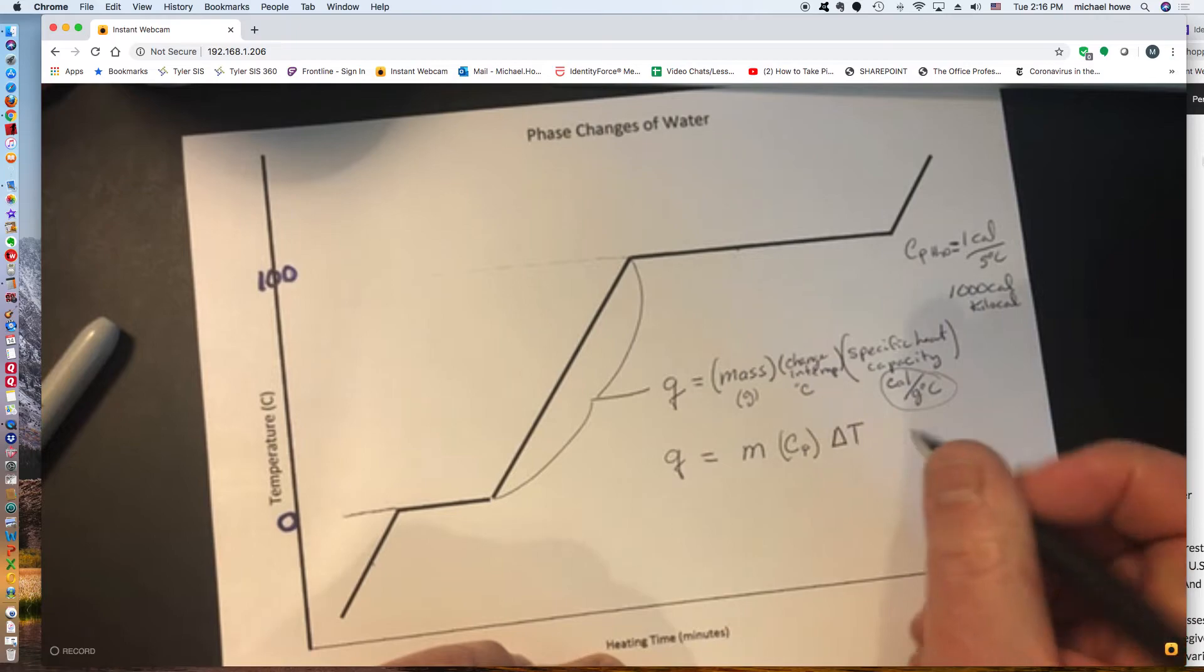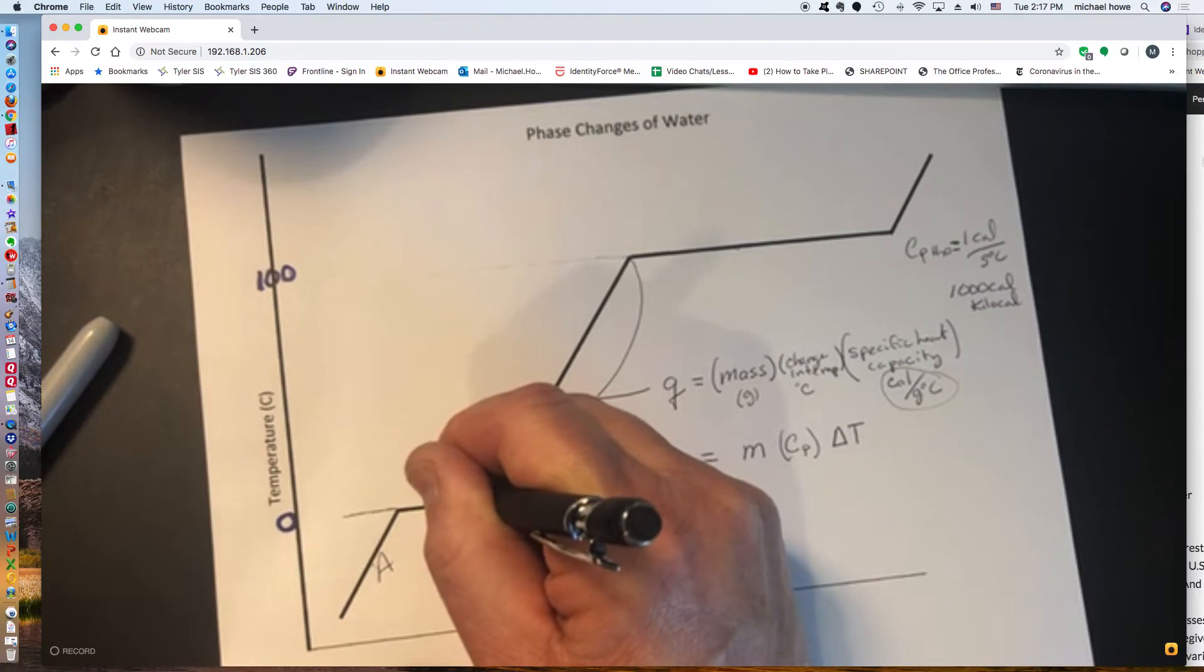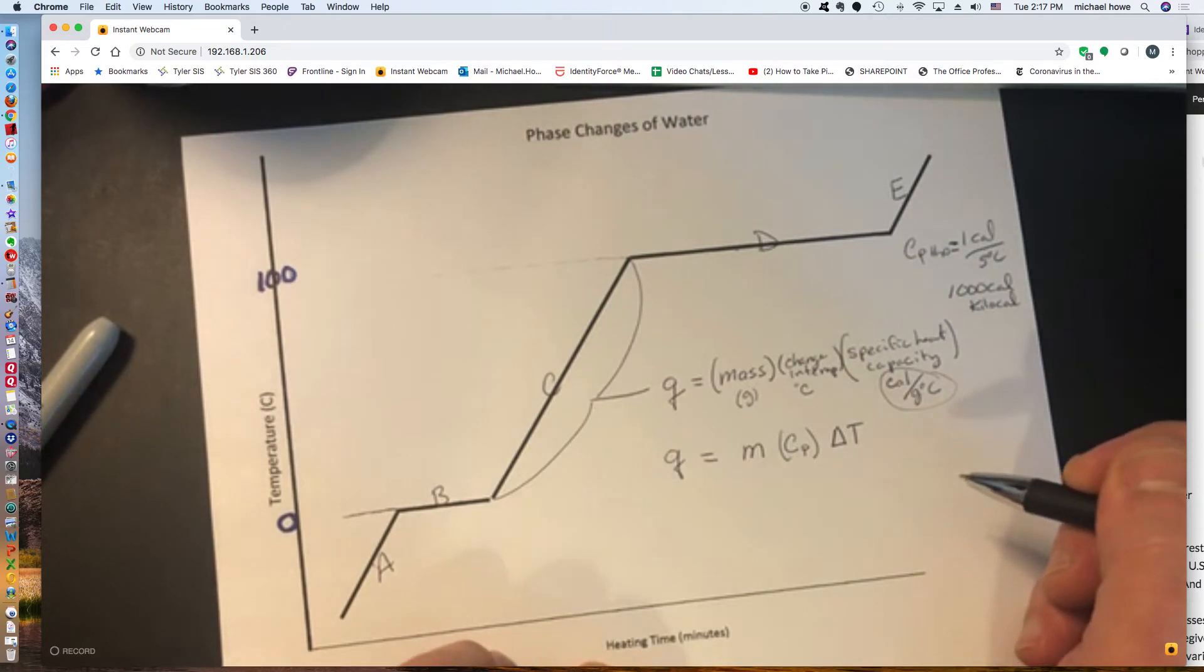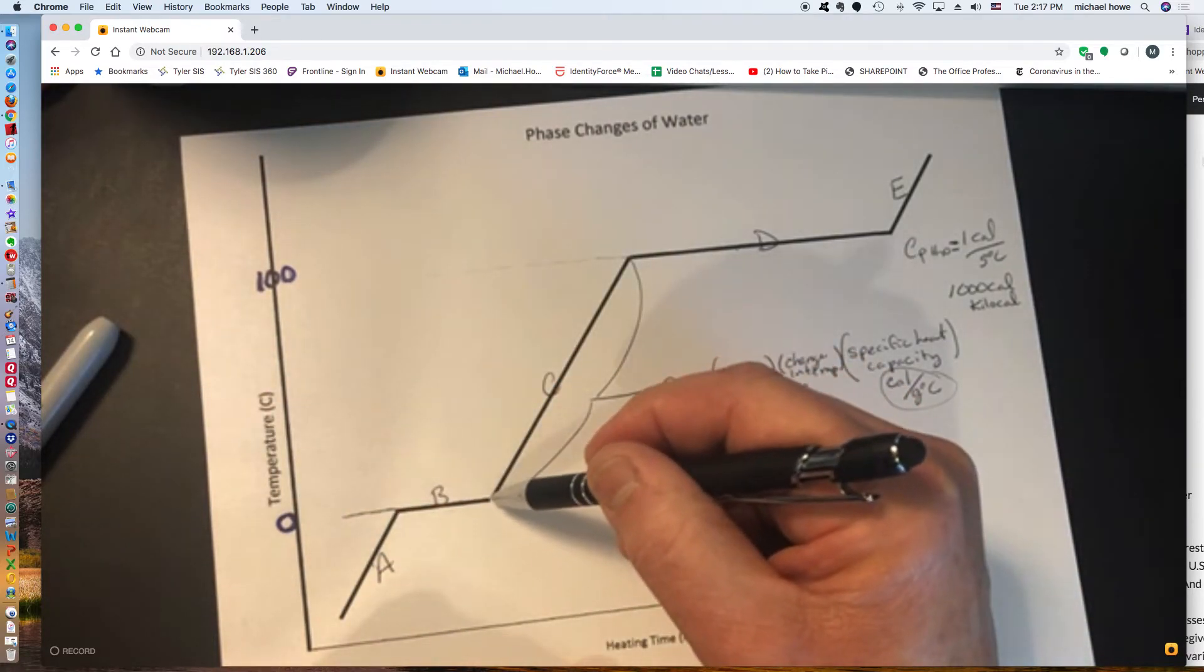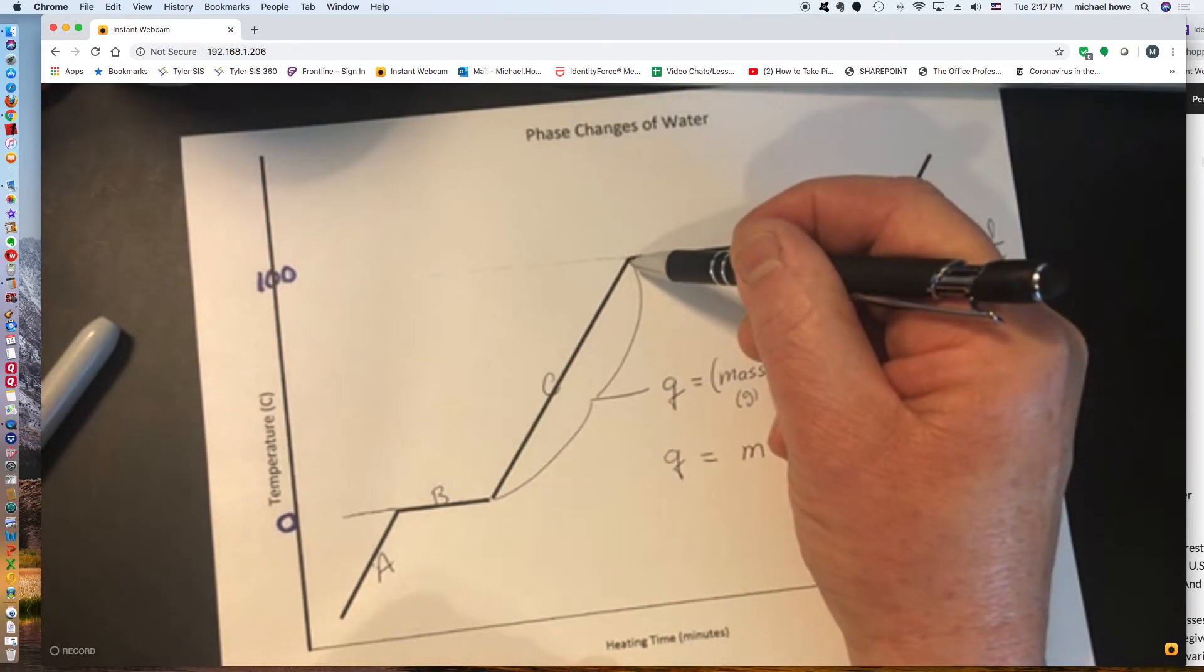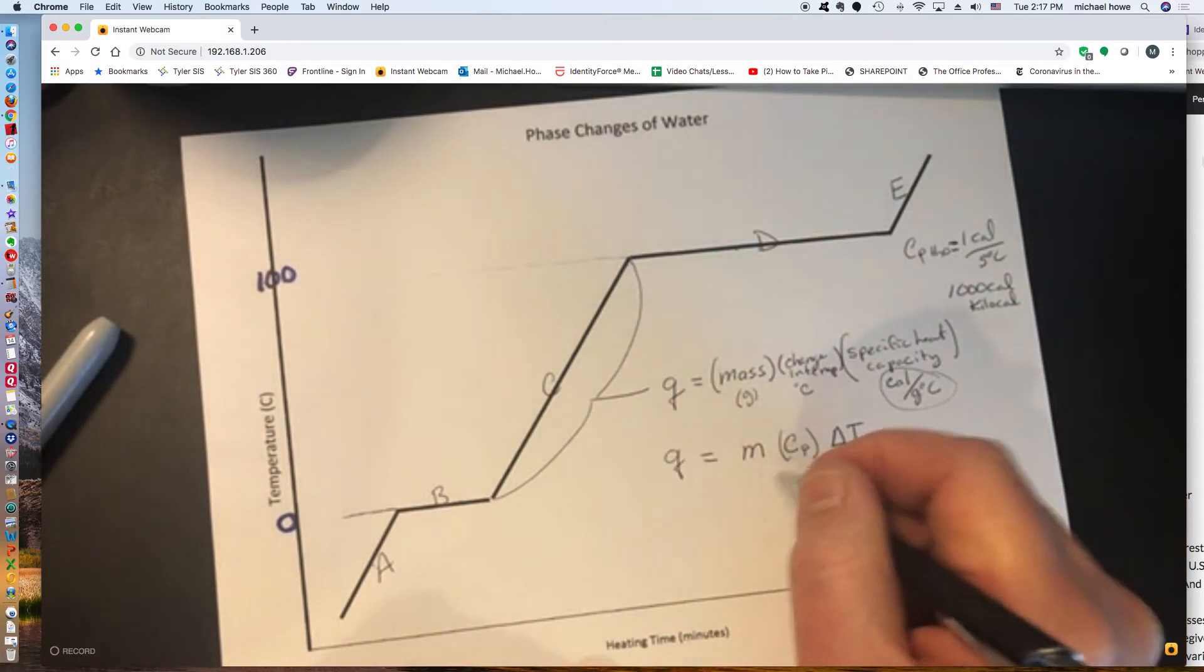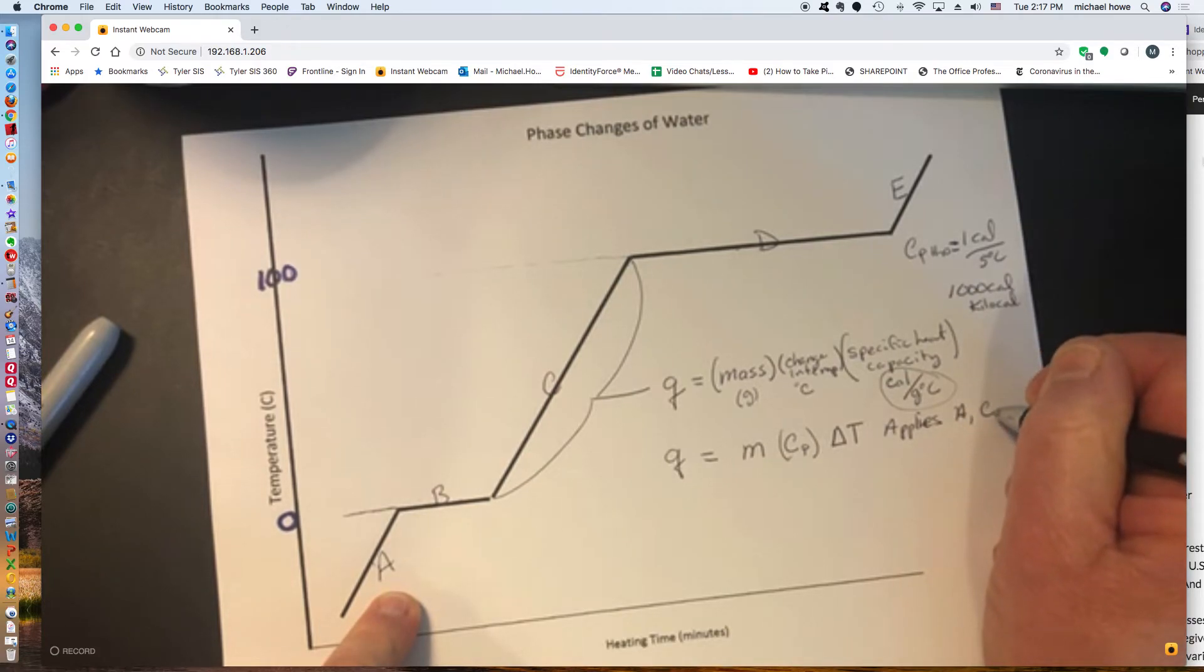So where does it apply? I'll label the graph region A, region B, region C, region D, and region E. So which of those regions involve a temperature change? A does. As you go from here to here, you're changing on the Y axis. From this point to here point, this point. So from here to here, that would be a temperature change. That's region C. So this formula applies in region A, region C, and then the third place it applies is in region E.